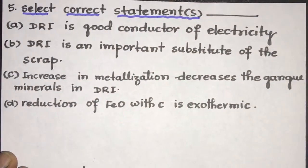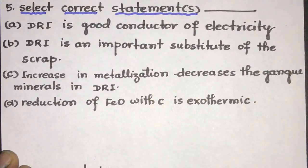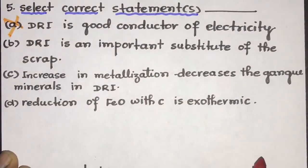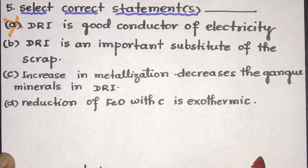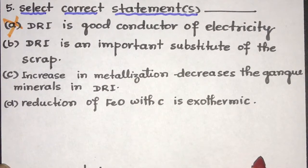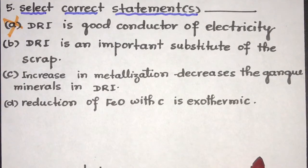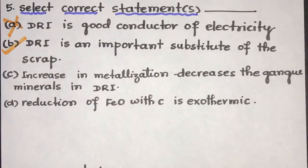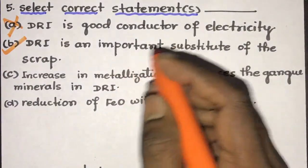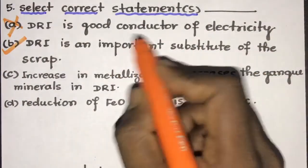Now coming to the next. Select the correct statements. DRI is a good conductor of electricity. This statement is absolutely wrong. DRI that is the direct reduced iron is not a good conductor of electricity. This is a non-conductor of electricity. DRI is an important substitute of the scrap. This is absolutely correct. Because the tramp elements in DRI is very small, this is about 0.02%.